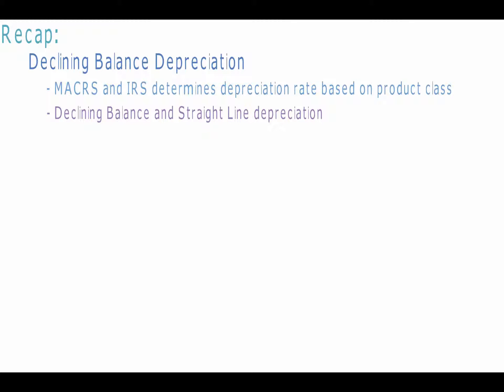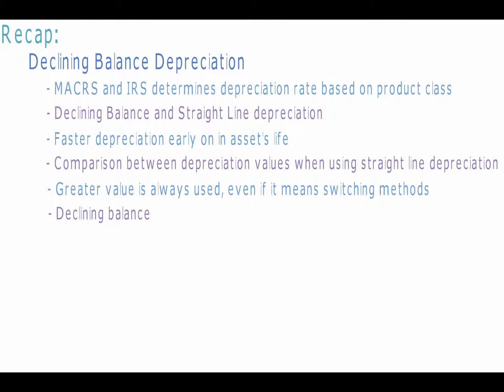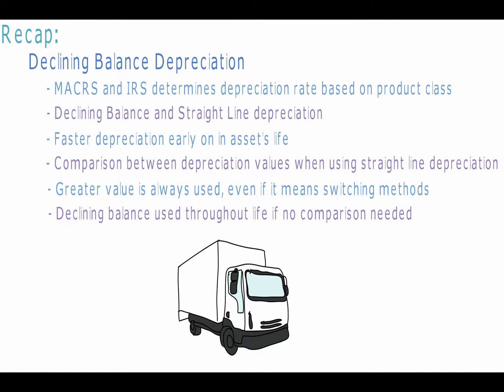To recap, declining balance depreciation is used by the MACRS in the USA and its depreciation rate is determined by the IRS depending on the product class. It is calculated with either straight line depreciation or by itself. This method ensures faster depreciation earlier on in an asset's life and is used when assets lose value quickly. When calculated with straight line, whichever depreciation value is greater will be used, even if it means switching depreciation methods during an asset's useful life. If not used with straight line, the declining balance depreciation method will be used for the asset's entire useful life.